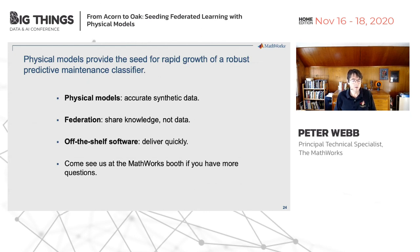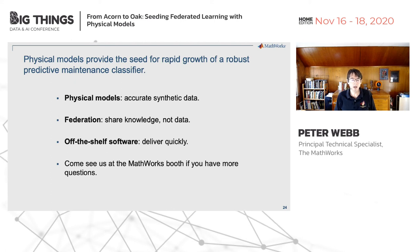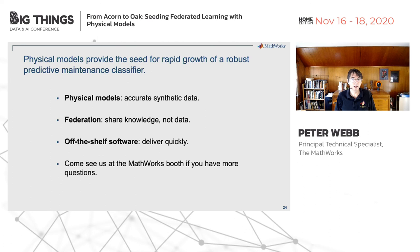So this is what we've learned: the training data provided by physical models gives you a head start, and using off-the-shelf components lets you put a system together really quickly. Federation makes your model smarter, and careful separation of concerns and interface design makes it easier to scale where necessary. Physical models provide the seed for rapid growth of a robust predictive maintenance classifier. Thank you very much.